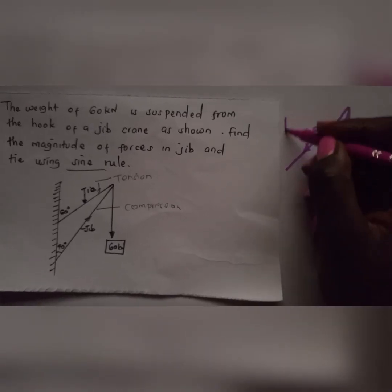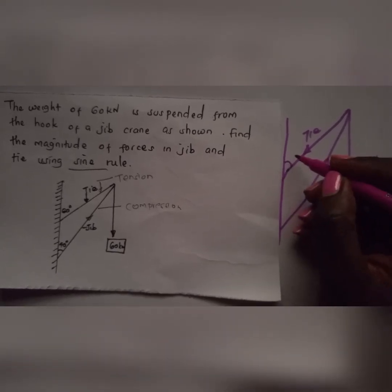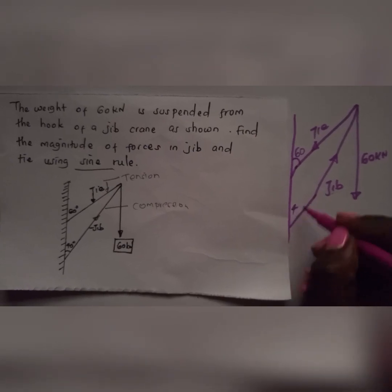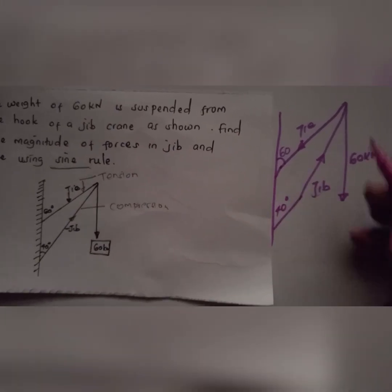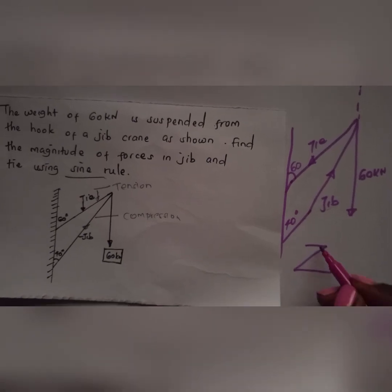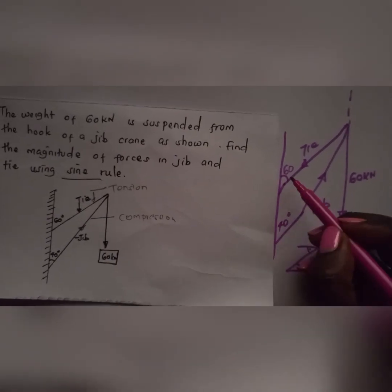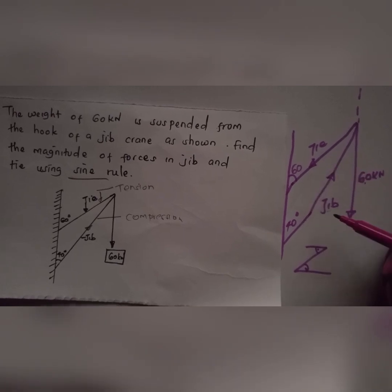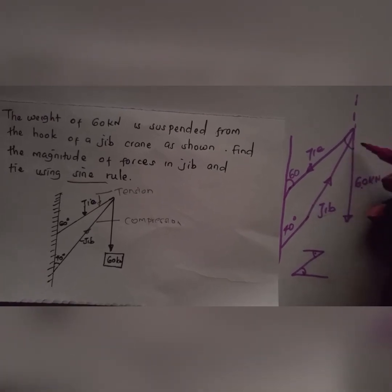If the load is here and we have these two forces — this one is 60 kN and this angle is 40 degrees — if you observe this angle and extend it in dashes, it forms Z-angles. By the alternate angle rule, this angle here is equal to the other angle. So that tells us that 60 degrees is the angle formed by the 60 kN force and the tie. The 40 degrees is also equal to the small angle between the jib and the 60 kN force.